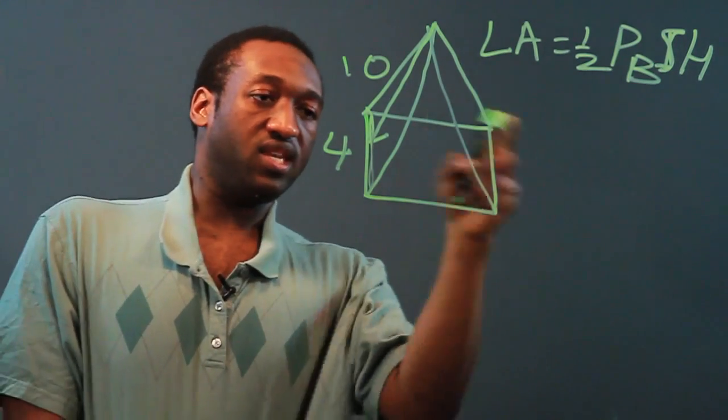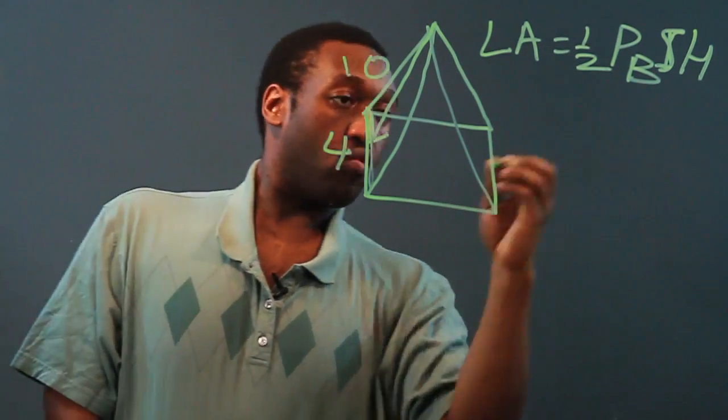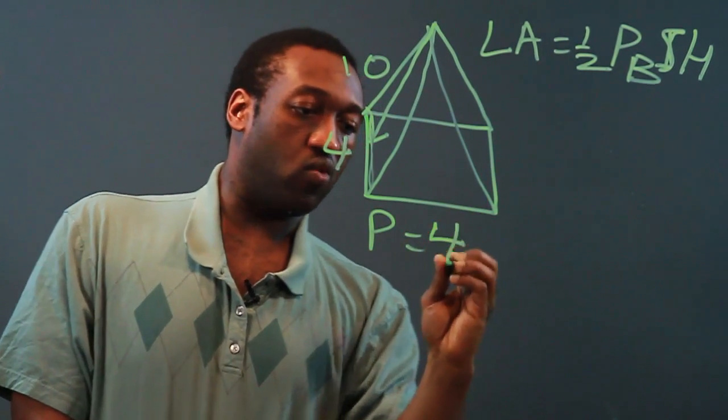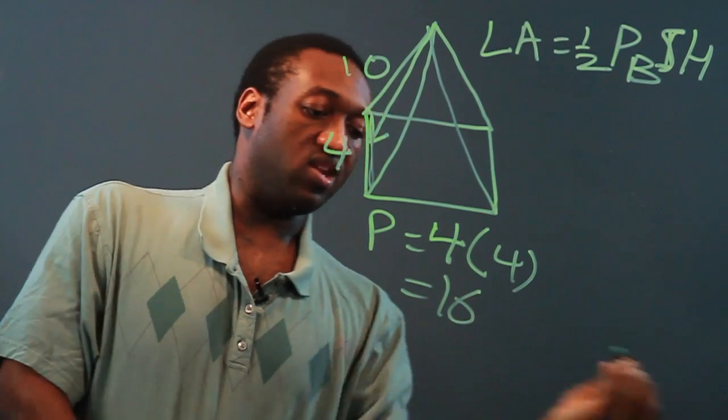So since in this case the base is a square, the perimeter, which is just four times a side since we're dealing with a square, would be 16 units.